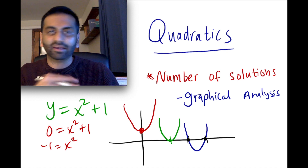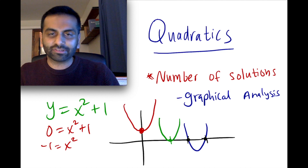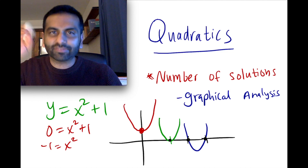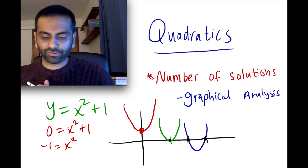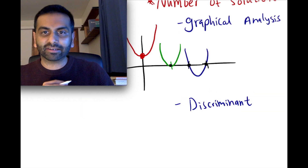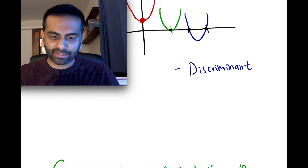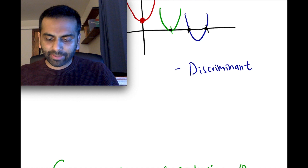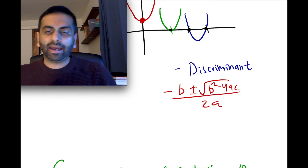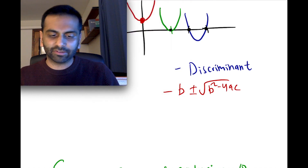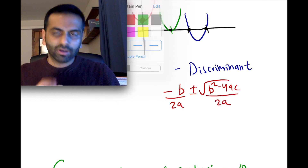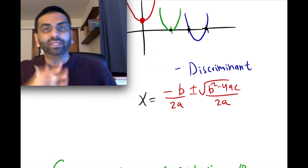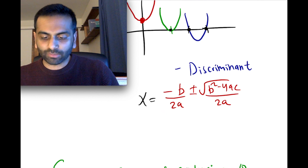So graphically it's pretty easy to tell: if you're given the graph, you can just look and say no solutions if it doesn't touch, one solution if it's tangent, and two solutions if it crosses the x-axis. Now what about algebraically? Here's where we can use some insight into the quadratic formula and look at this thing called the discriminant. You might be used to the quadratic formula written as negative b plus or minus the square root of b squared minus 4ac, all over 2a. A useful way to write it is to split the denominator, separating it into two terms — negative b over 2a, and then the square root part over 2a. Algebraically, when using the quadratic formula, why do we usually get two solutions? It's because you have something plus or minus, so plussing and minusing something already gives two solutions.